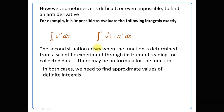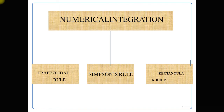Dear students, sometimes the exact result of definite integration is impossible. At this stage, we need an approximate value of definite integrals. For those approximate values, we have some numerical integration formulas — numerical integration methods in which one is called the trapezoidal rule, another is called Simpson's rule, and the third one is called the rectangular rule. Today in this video lecture, we are going to discuss the trapezoidal rule for the approximate value of definite integrals.